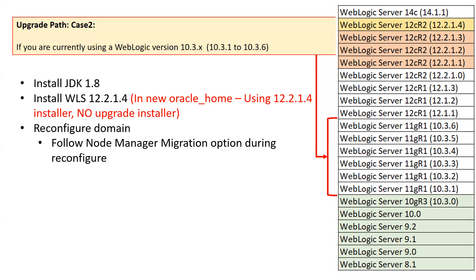Once WebLogic 12.2.1.4 is installed in the new Oracle home, you have to reconfigure your domain. Go inside the 12.2.1.4 installation directory, initiate the reconfiguration wizard, and it will prompt you for the domain directory of your existing 10.3.6 domain. Once you provide that location, it will upgrade your domain to 12.2.1.4 and rewire it to the new 12.2.1.4 binaries. The third step is to reconfigure your node manager, which you can do via the node manager migration option available in the reconfiguration wizard.